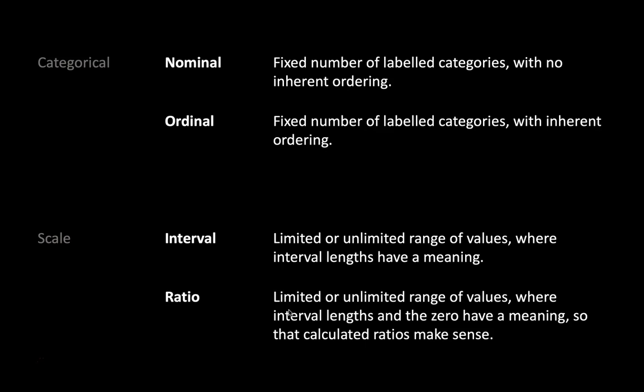An ordinal variable is very similar to a nominal variable — it also has a fixed number of categories that can be labeled. But now the ordering does matter. For example, when we look at education, we can say that somebody with secondary education has more education than somebody with primary education. You don't know how much more, but you know that there is a certain order to it.